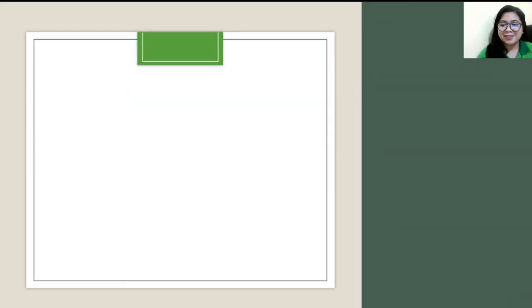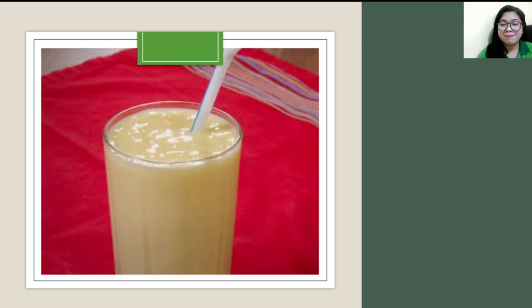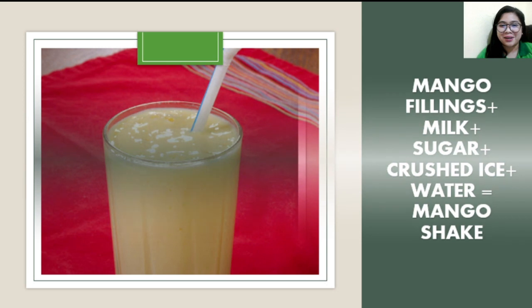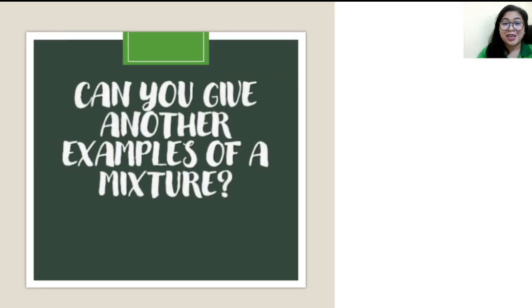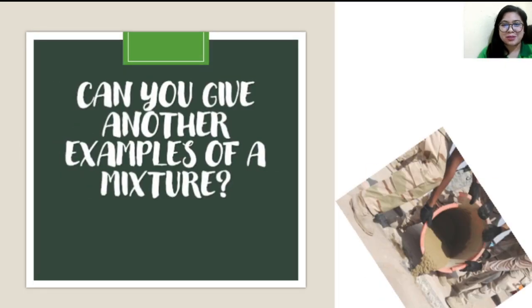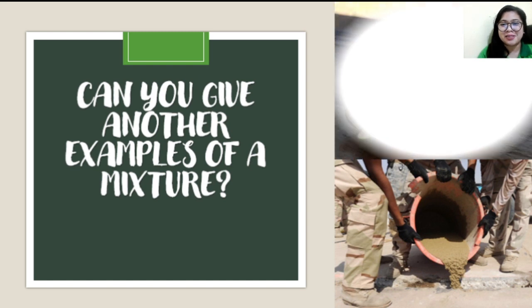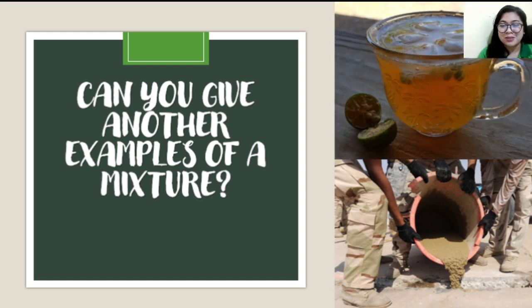Another example is mango shake, which consists of mango fillings, milk, sugar, crushed ice, and water. Can you give me another example of a mixture? We have cement, used for building construction. We also have calamansi juice, which is very popular to fight COVID-19 and to boost our immune system.